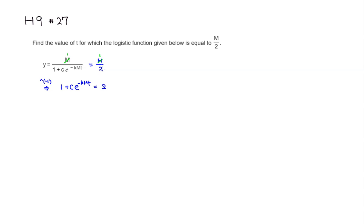So let's get rid of 1. I'm going to subtract 1 from both sides. We have c e to the negative kmt is equal to now 1. We can get rid of c. How do we do that? We can divide through by c. So you have e to the negative kmt is equal to 1 over c. Or you can write it as c to the negative 1. Same thing. Doesn't matter.